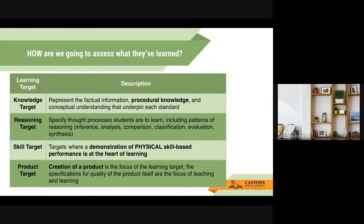There are several different types of learning targets that can come from your standards. The knowledge target represents factual information, procedural knowledge, and conceptual understanding. Reasoning covers logical reasoning, inference, analysis, comparison, and classification. The skill target involves demonstrating a physical skill-based performance. And then the product target is the creation of a product — something students can physically hand to you. These are the different types of learning targets that can come from each standard.